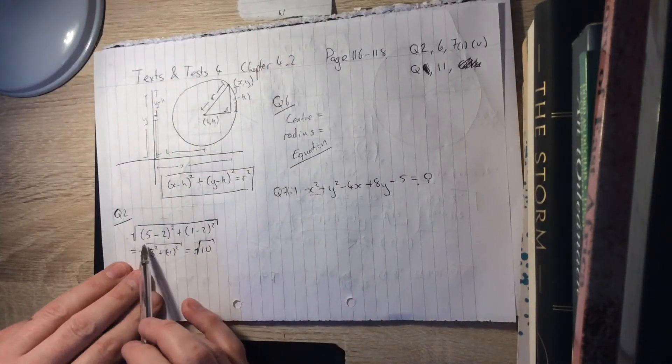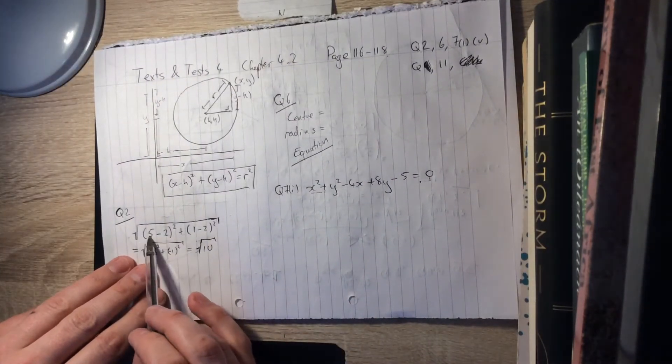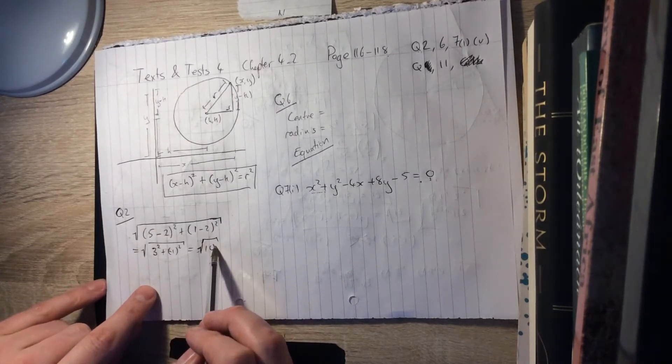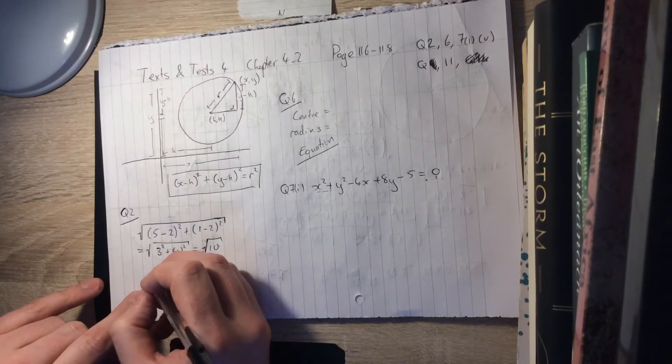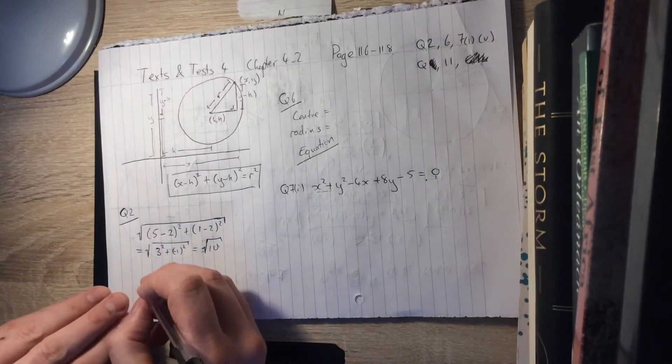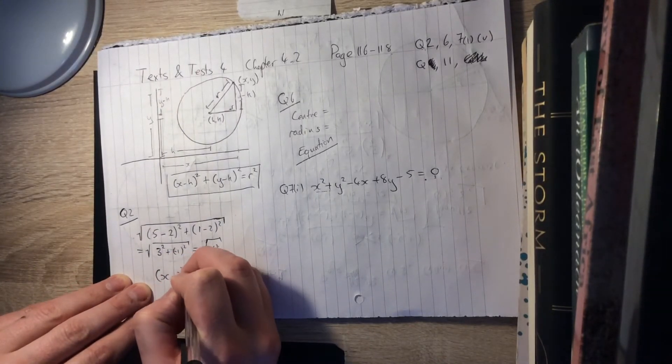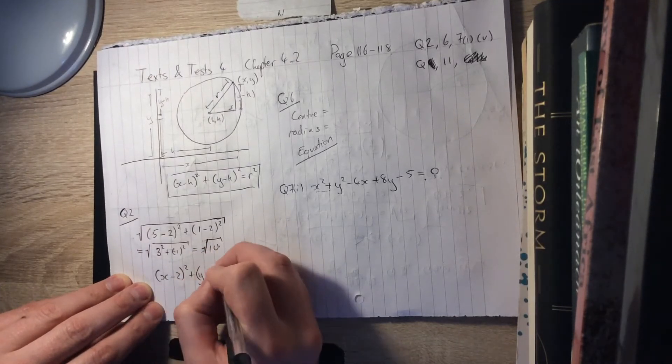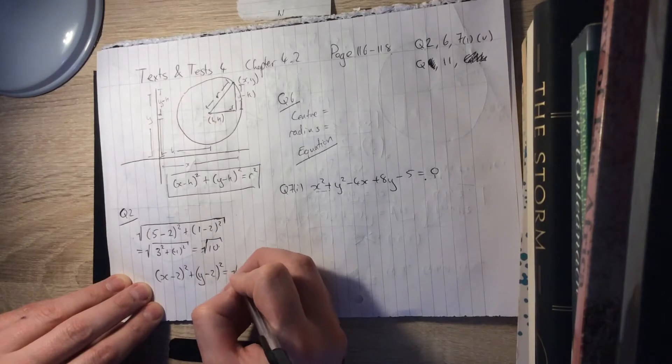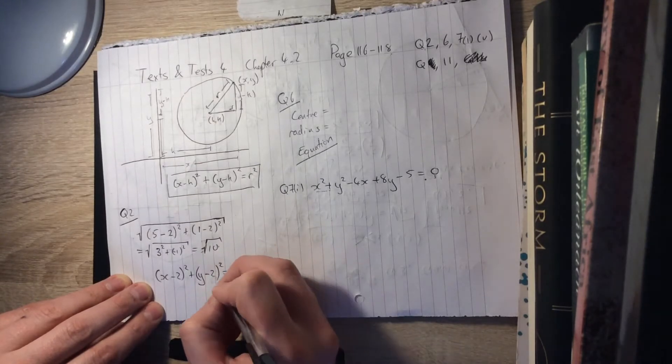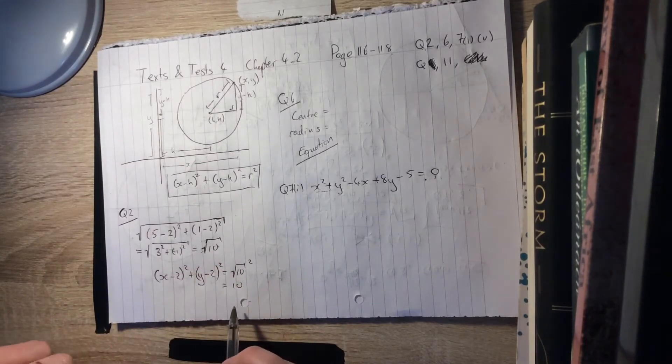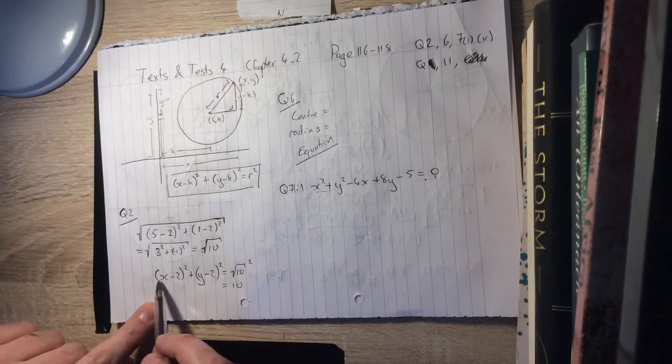So here's our distance formula here. Between 2, 2 and 5, 1, it's going to be 5 minus 2 squared plus 1 minus 2 squared. We're going to get an answer of root 10, which means for that one, the equation of our circle will be x minus 2 squared plus y minus 2 squared equals root 10 squared, or equals 10. So there's the equation for our circle.